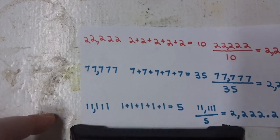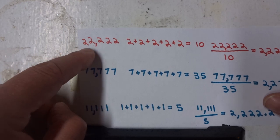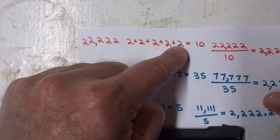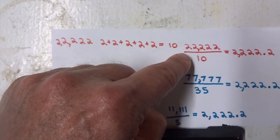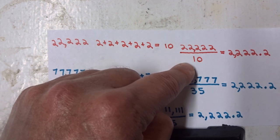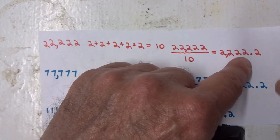And we can even continue to go up on higher numbers. 22,222. Add the twos together, we get 10. Divide 22,222 by 10, and we get 2,222.2.